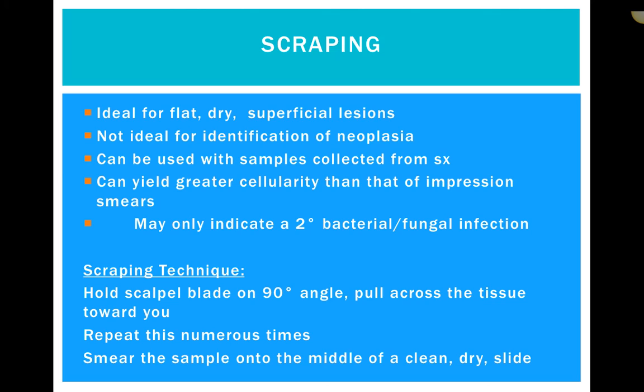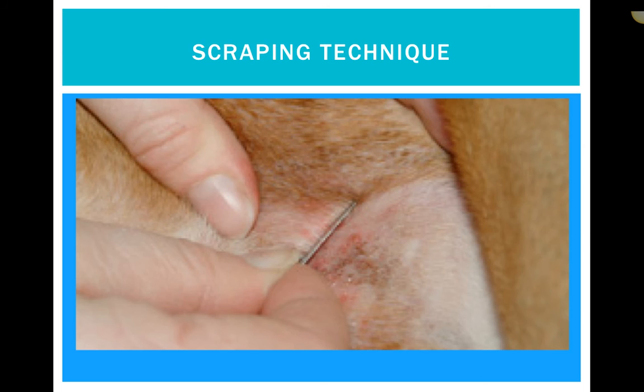You can see here — scraping at a 90-degree angle, pulling the blade toward you across the skin. Going back to the scraping technique: we also use this on excised organs using exactly the same technique. However, you normally only need to scrape once across, because you yield an excessive amount of cells, which doesn't smear well onto a slide if you have too many.